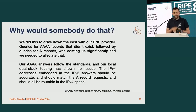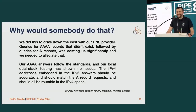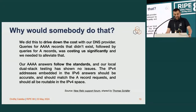I copied the company's answer verbatim: 'We did this to drive down the cost of our DNS provider — queries for AAAA records that didn't exist, followed by queries for A records, was costing us significantly. Our AAAA answers follow the standards and our dual-stack testing has shown no issues. The IPv4 address embedded in the IPv6 answers should be accurate, should match the A record, and should all be routable in the IPv4 space.' I see facepalming people in the room, and that's exactly what I felt when I read this.